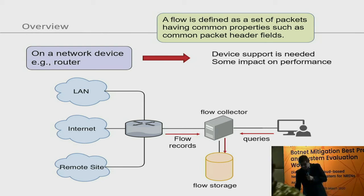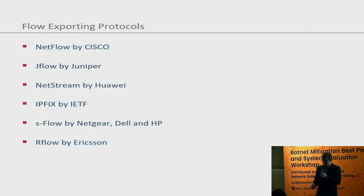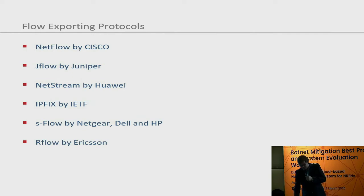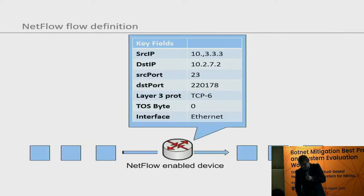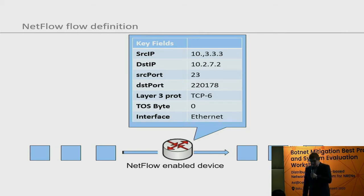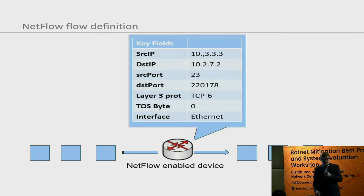There are lots of different flow exporting protocols from different router vendors. There is NetFlow by Cisco, JFlow by Juniper, NetStream by Huawei, and so on. Those protocols are different but tell the same story. In NetFlow you have the source IP address, destination IP address, source port, destination port, the layer 3 protocol, TOS byte, and the interface where the NetFlow was recorded. There is no actual data included — it is just metadata about the traffic.